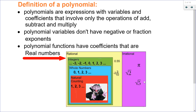Let's begin with a definition of what polynomials actually are. Polynomials are expressions that have variables and coefficients, which are numbers, that are tied together with addition, subtraction, and multiplication. The variables do not have any negative or fraction exponents. So you can't have any negative or fraction exponents. And also, the coefficients of the numbers in front have to be real numbers.